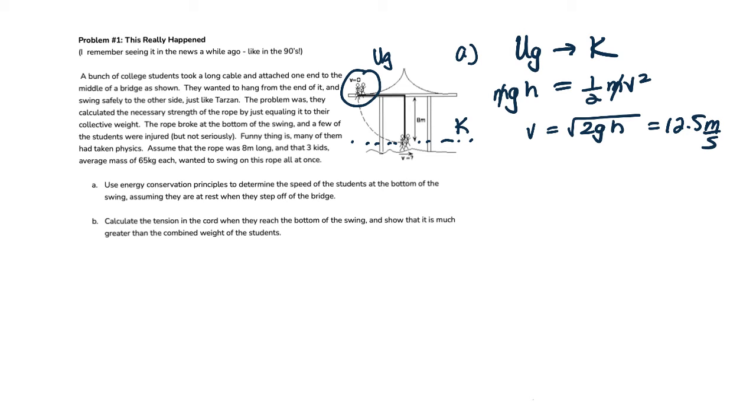All right. Now let's look at part B. Calculate the tension in the chord when they reach the bottom of the swing and show that it is much greater than the combined weight of the students. Alas, the follies of youth.